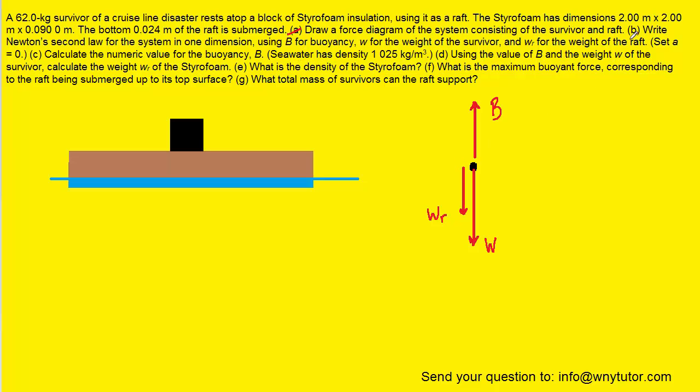For part B, we're being asked to write Newton's second law for the system in one dimension. They say one dimension because all of the forces are acting in the y direction only. Now Newton's second law requires us to take the sum of the forces, and since our system is in equilibrium, which means it's not accelerating upward or downward, we can set the sum of the forces equal to zero.